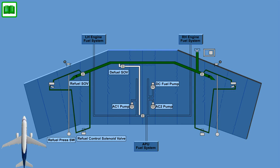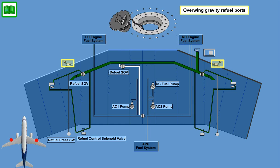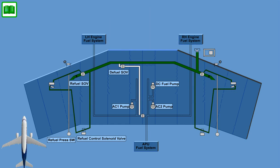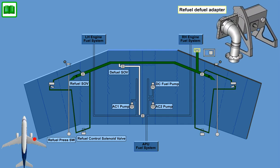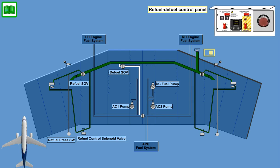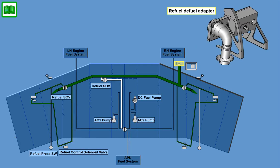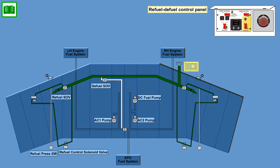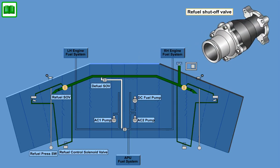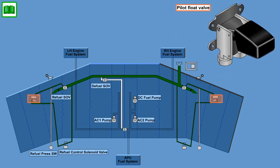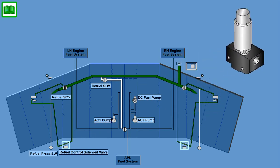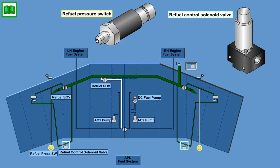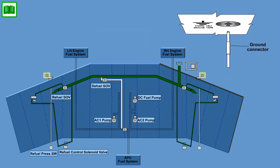The aircraft can be refueled by gravity through the two overwing gravity fill ports. Standard refueling and defueling will be performed by use of the single-point pressure refueling-defueling adapter. The adapter, along with the refuel control panel, is installed behind an access door on the right-hand leading edge. The pressure refueling system consists of the single-point refueling adapter, a refuel-defuel control panel, a refuel shut-off valve, and a high-level float pilot valve in each wing tank refuel line. A refuel control solenoid and a refuel pressure switch are installed on either side. Grounding points are provided so that the aircraft and the fueling truck can be properly grounded during refueling and defueling.